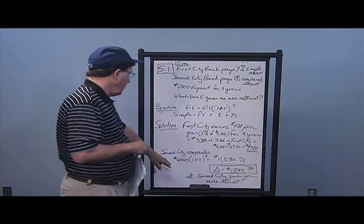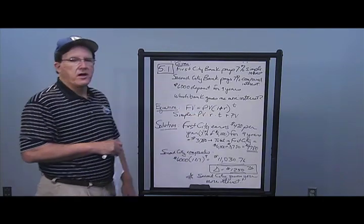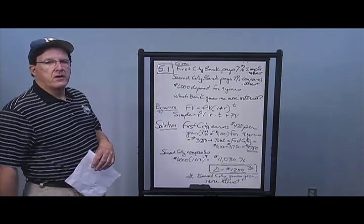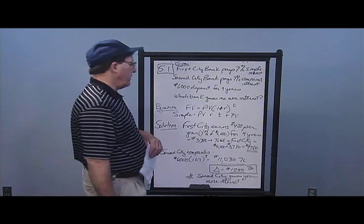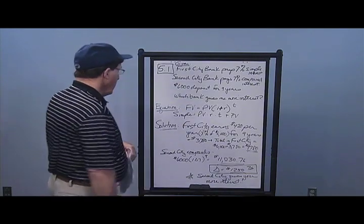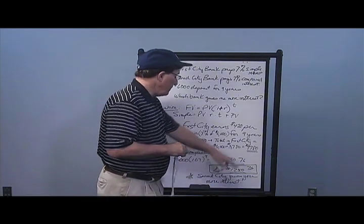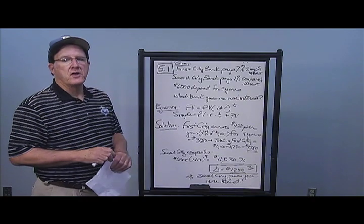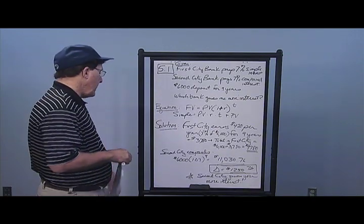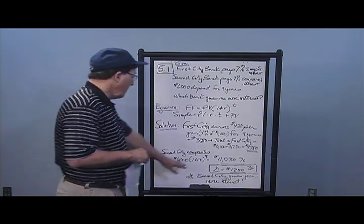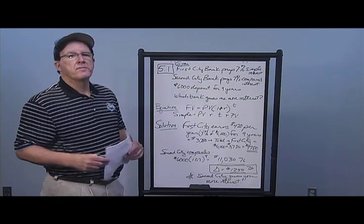Second Citibank gives compound interest, so I get interest on interest. My formula is $6,000 times 1.07 to the ninth power, which equals $11,030.76. You can see it's much higher than First Citibank — a difference of $1,250.76.